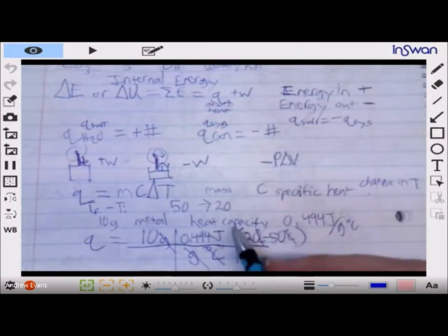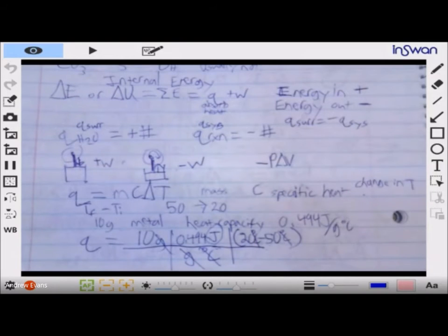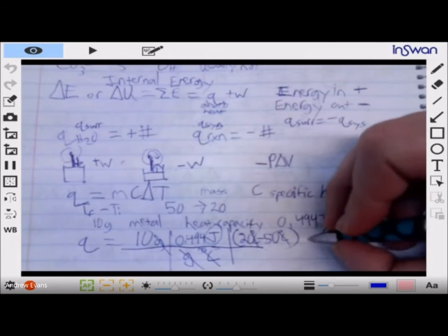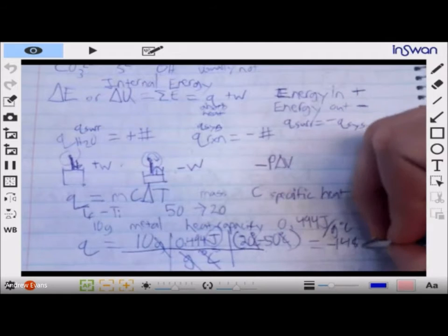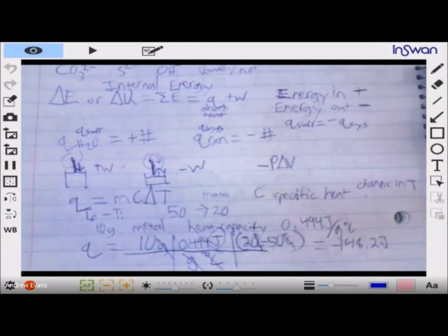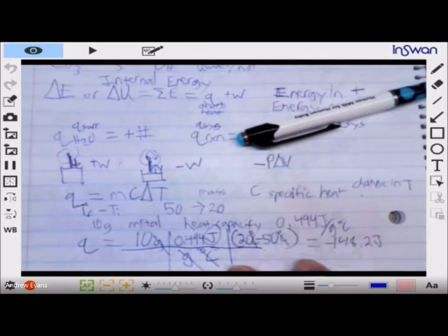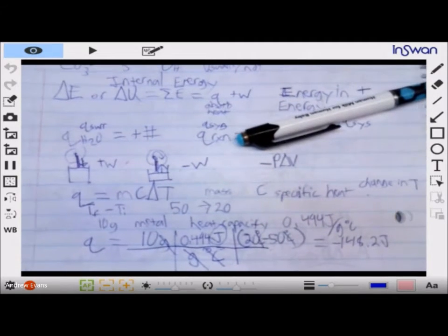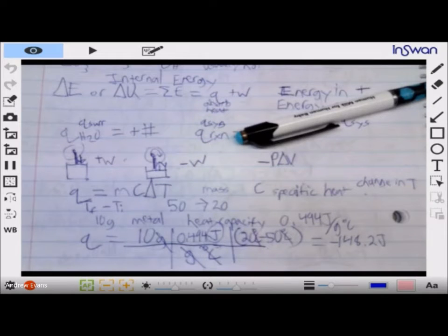Degrees C cancels out with degrees C, grams cancels with grams. What unit are we left with? The unit of heat energy. In this particular problem you would have a negative q - you would have a q equal to negative 148.2 joules. We know it's negative, meaning heat is released, because of the sign of our delta t. Had you done it 50 minus 20, you would have had a positive number, and that would be technically wrong.